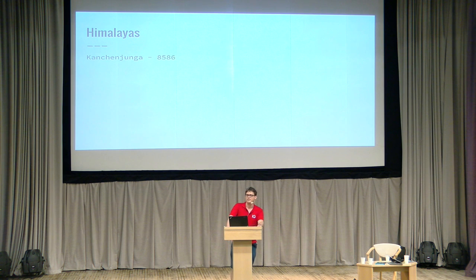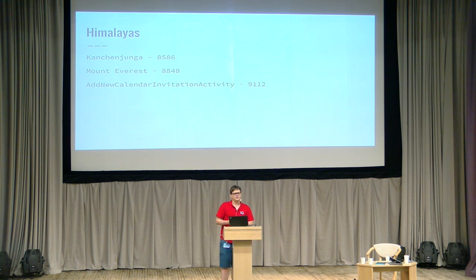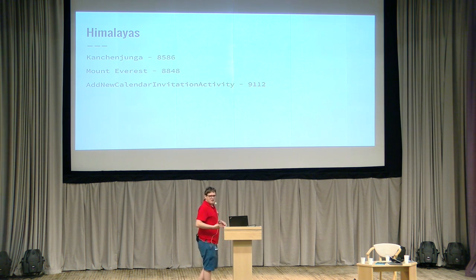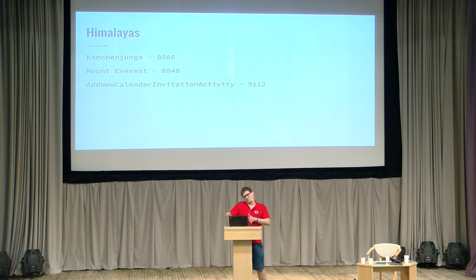The third biggest mountain in the world is Kanchenjunga, something above 8,500 meters. Mount Everest, we all know, is the highest mountain in the world. But in my previous project we had a new calendar invitation activity of 9,000 lines. We used to nickname our activity classes after the mountain that was closest in height to the height of our class in terms of lines.